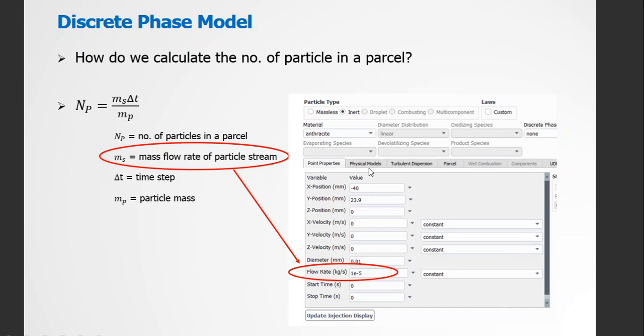This is the dialog box of discrete phase model in ANSYS Fluent. Here the flow rate we set is actually the mass flow rate of particle stream. And delta T time step is the time step size we set to the simulation to advance a particle through the fluid domain.